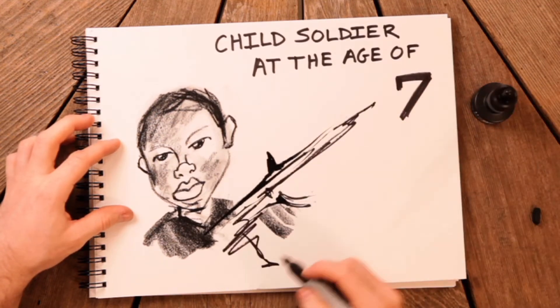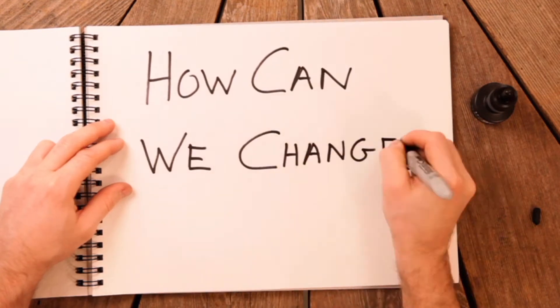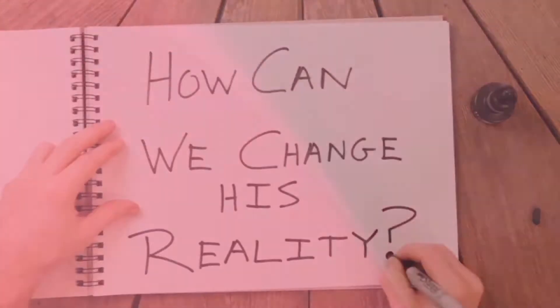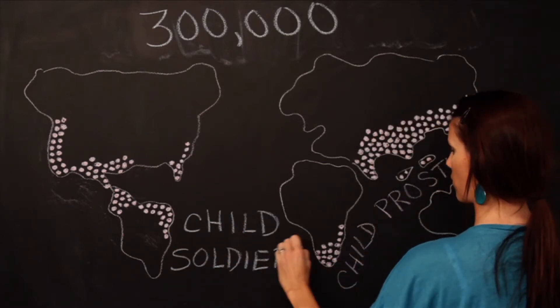But he lived in constant fear and hopelessness. How can we change his reality? There are approximately 300,000 child soldiers in the world today.